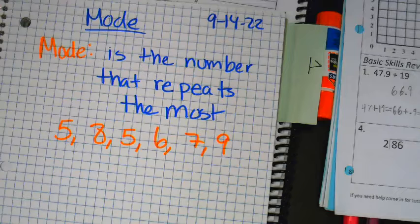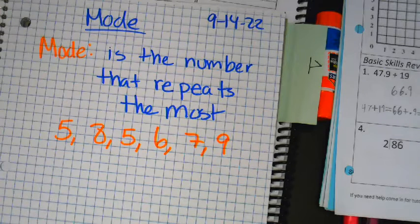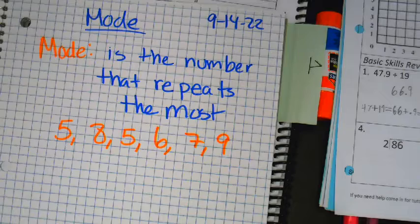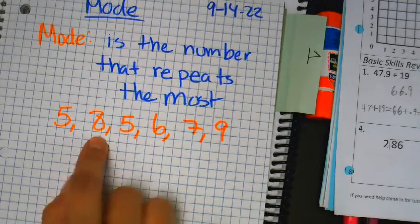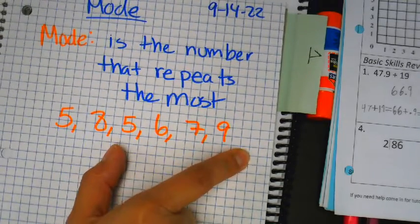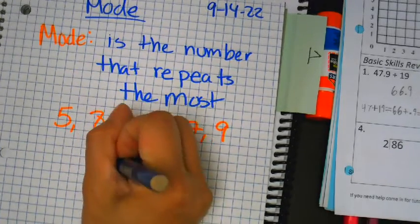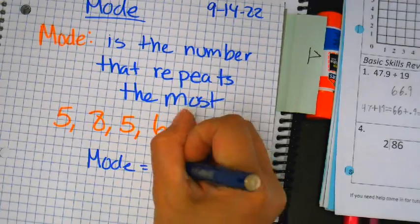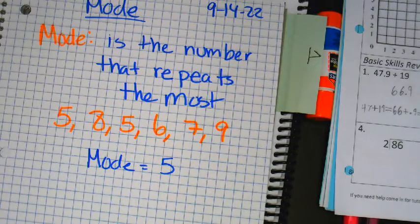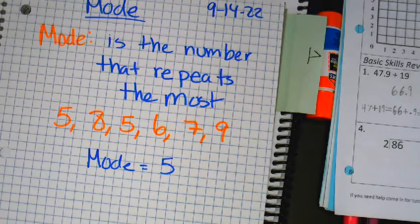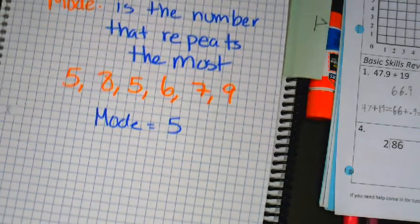Gentlemen, I don't need that. I am recording. There's no need for you to be shouting out. You have notes to copy. So if I give you 5, 8, 5, 6, 7, 9, which number repeats the most? 5. Therefore, the mode equals 5.